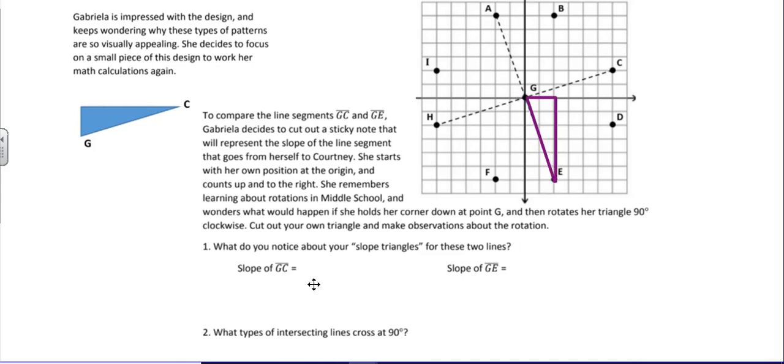Now question one asks, what do you notice about your slope triangles for these two lines? So the slope of GC was up 2 and over 6, which would simplify to 1/3. The slope of GE is down 6 and over 2, which would simplify to negative 3. There's an interesting relationship here.